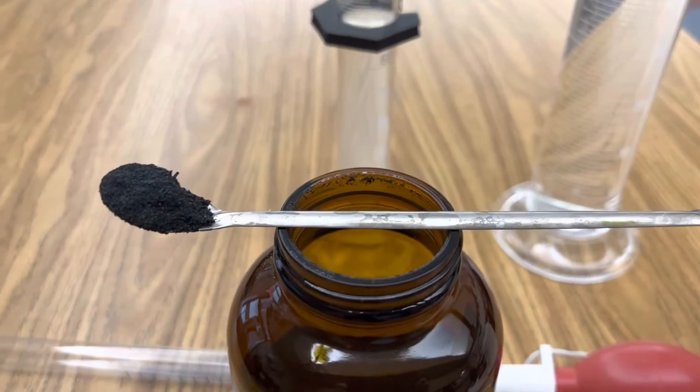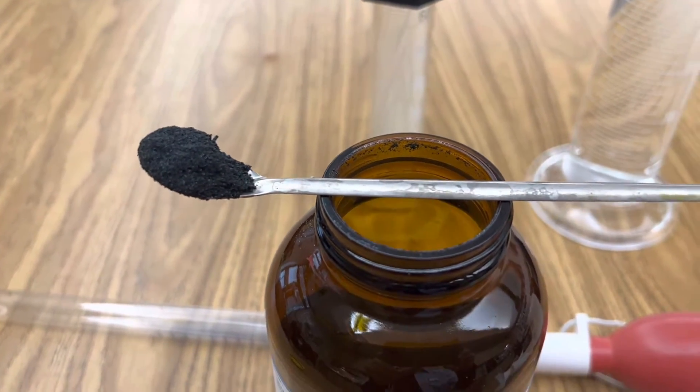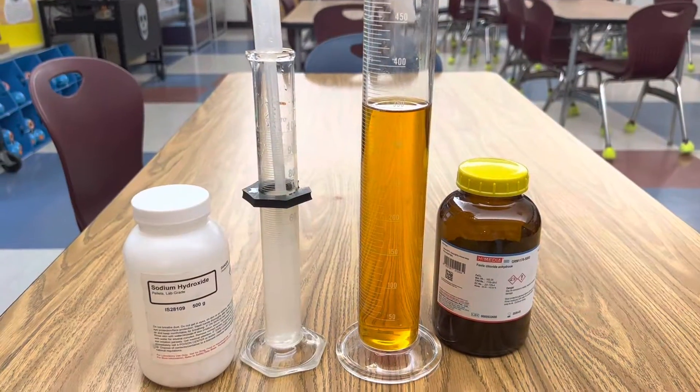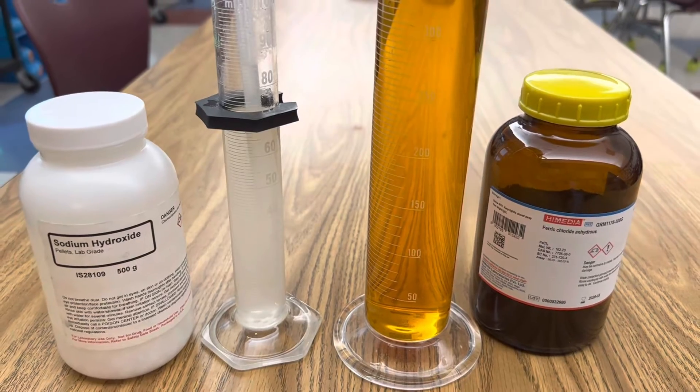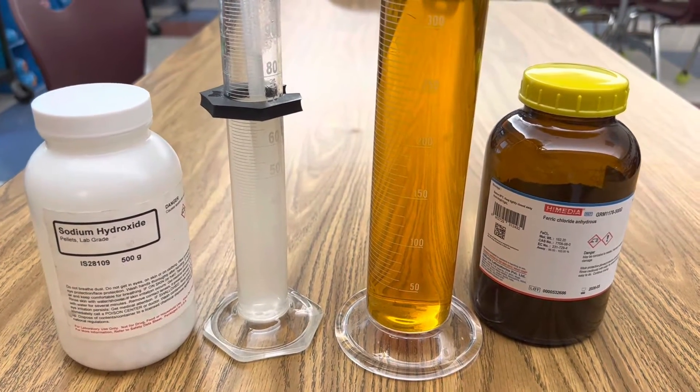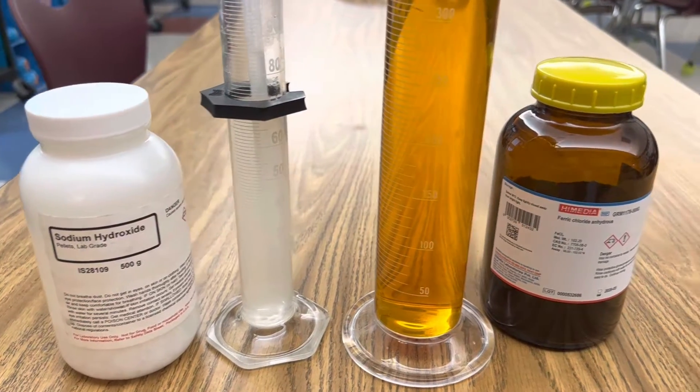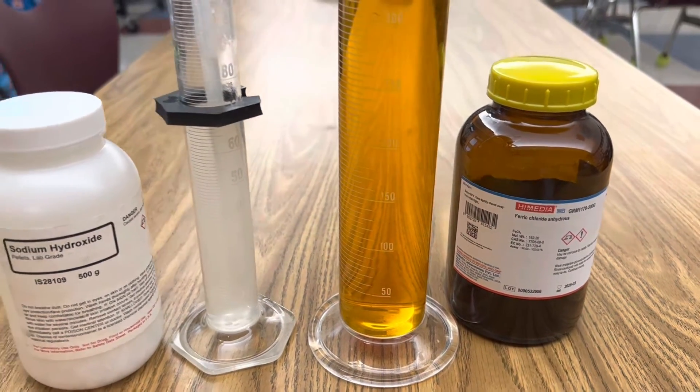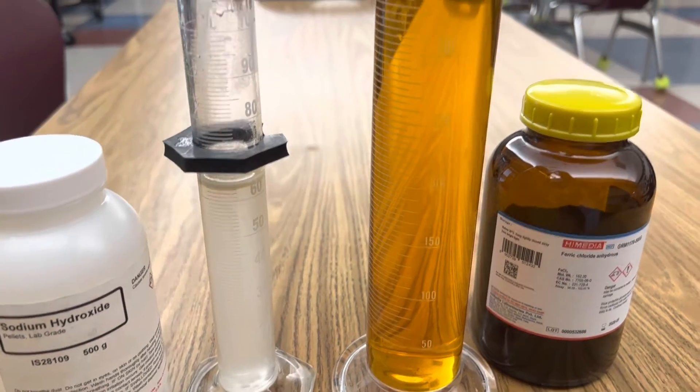Ferric chloride is also called iron chloride as the Latin name for iron is ferrum. Once both solutions are aqueous you're ready to observe the double displacement reaction of sodium hydroxide and ferric chloride. As you combine the two, sodium will trade places with iron and create the insoluble precipitant ferric hydroxide.